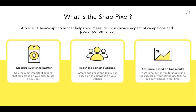For example, let's say you are a clothing brand and want to retarget users who have visited your website. The pixel will allow you to create a custom audience of those users and retarget them. This would allow you to maximize your results with Snapchat. The SnapPixel also helps you target and optimize, but we'll go into that later.